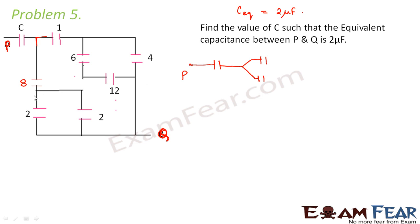Now if you look at capacitor 1 — where does it go after this? Capacitor 1 goes to 6 and 4. Let us say this is 6 and this is 4.